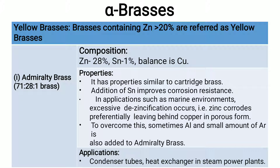Admiralty brass is a 71-28-1 brass with 28% zinc, 1% tin, and balance copper. It has properties similar to cartridge brass. The addition of tin improves corrosion resistance. It is used in marine environments where excessive de-zincification occurs — that is, zinc corrodes preferentially, leaving behind copper in porous form. To overcome this, aluminum and small amounts of antimony are added. Applications include condenser tubes and heat exchangers in power plants.